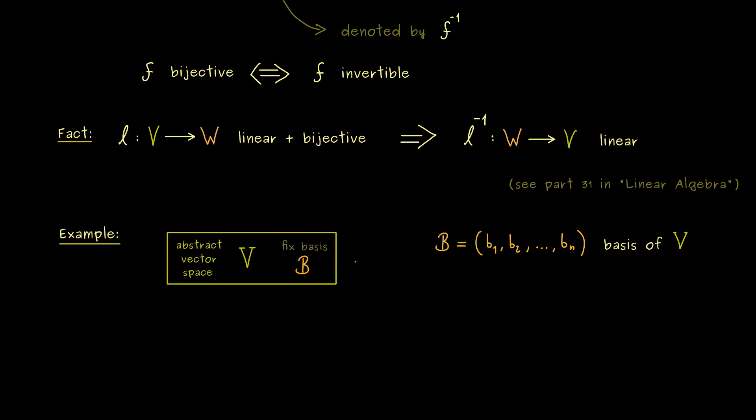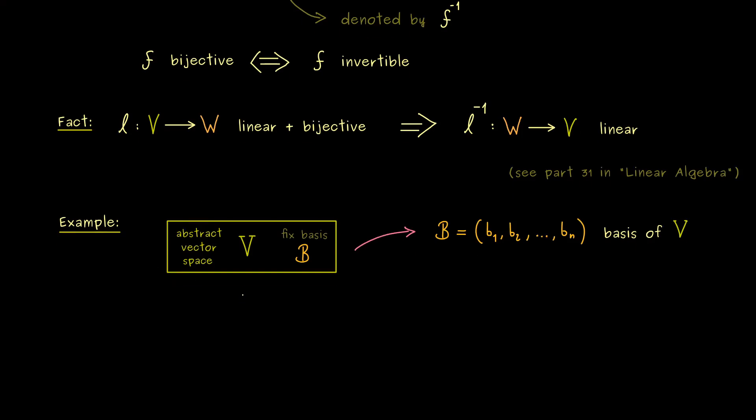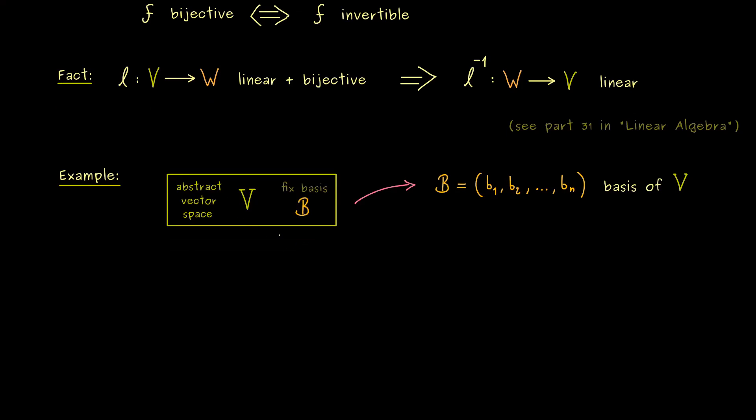This means we can say we have n elements in our basis. And now as you might remember, we can simply send this abstract vector space to the concrete one F^n. And there we just take the standard basis given by the canonical unit vectors.